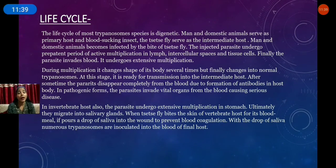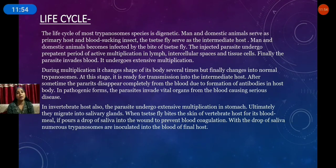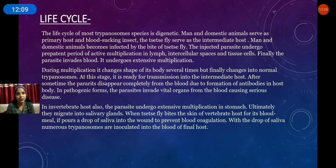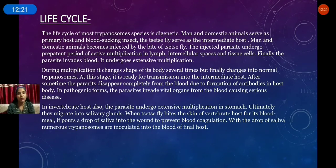The parasites migrate to the salivary glands of the tsetse fly. When the tsetse fly bites again, the saliva secreted — which helps prevent blood clotting — also injects the parasites through the saliva into the human being. New trypanosomes then develop and are ready for multiplication, completing this life cycle.